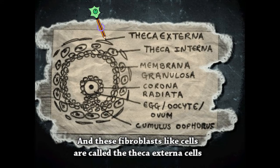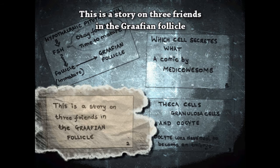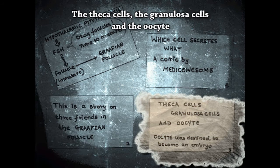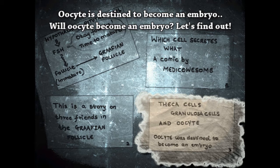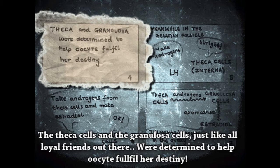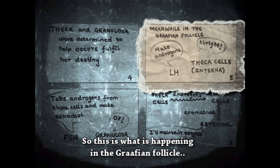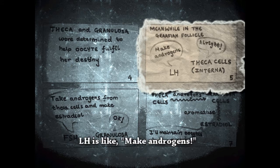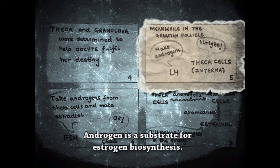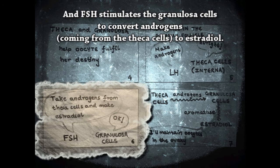Outside the granulosa cells are also fibroblast-like cells called the theca externa cells. This is a story of three friends in the Graafian follicle: the theca cells, the granulosa cells, and the oocyte. The oocyte is destined to become an embryo. The theca cells and the granulosa cells, like all loyal friends, are determined to help the oocyte fulfill her destiny. LH signals the theca cells to make androgens.